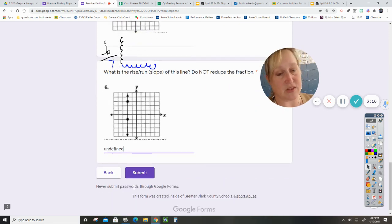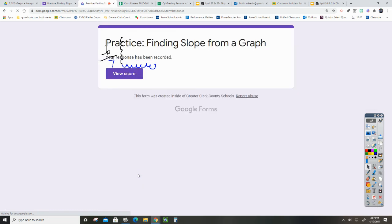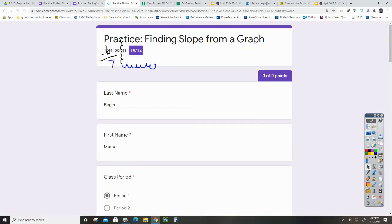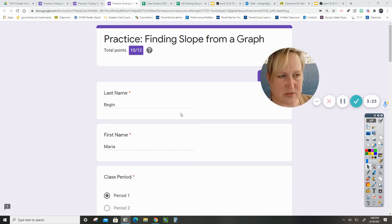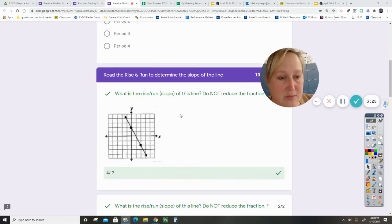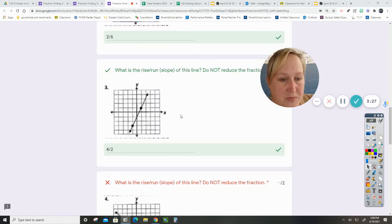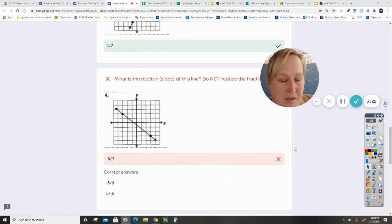Now, assuming I did everything right, we will have a good score. 10 out of 12. So let's see. I may have counted something wrong. Yeah, it looks like I might have counted. So let's check. One, two, three, four, five. Oh, Miss Began was right. This would be negative five over seven.